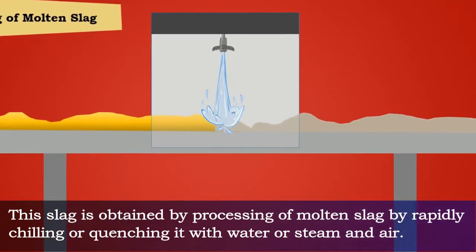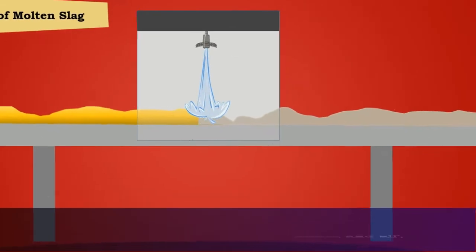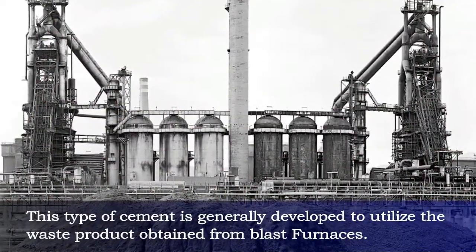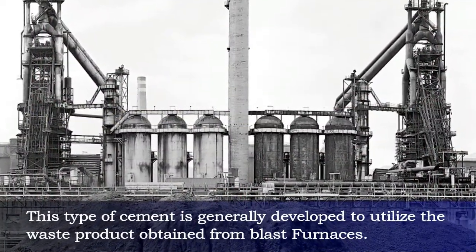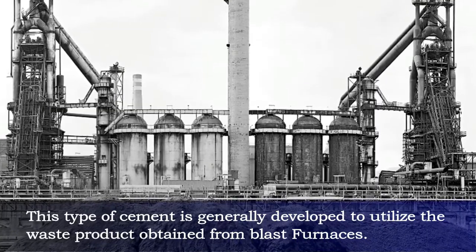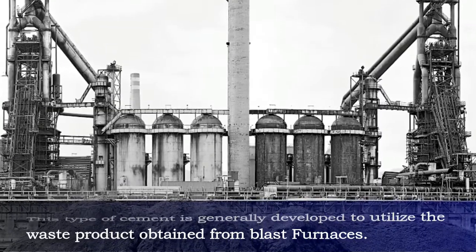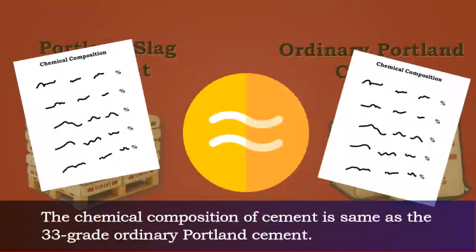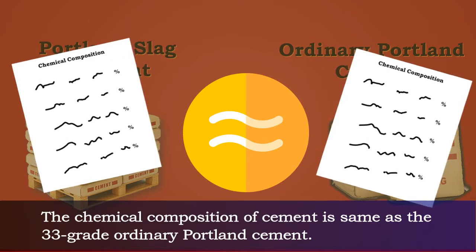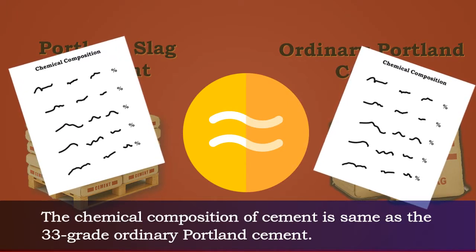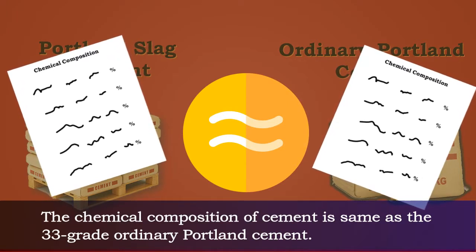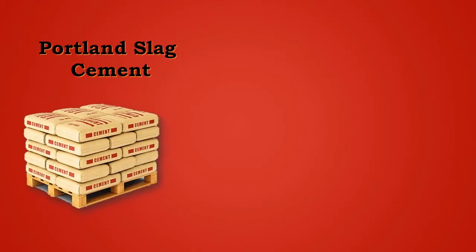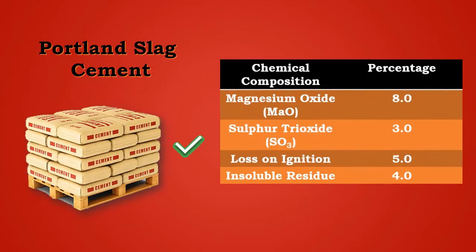This slag is obtained by processing molten slag by rapidly chilling or quenching it with water, steam, and air. This type of cement is generally developed to utilize the waste product obtained from blast furnaces. The chemical composition of the cement is the same as 33 grade Ordinary Portland Cement.